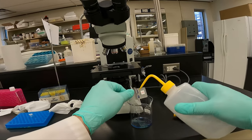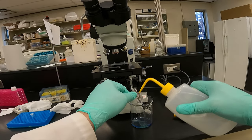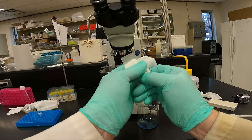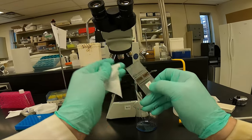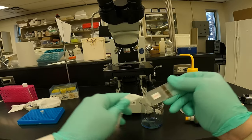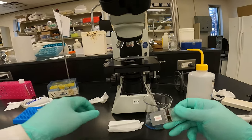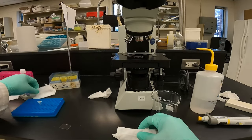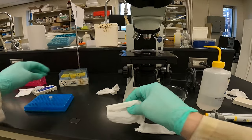Do the same thing with the hemocytometer. Spray it down with some isopropanol, and give it a wipe with the Kim wipe. I wrap this in a Kim wipe just to make sure it doesn't get scratched. And I'll do the same thing with the cover slip.